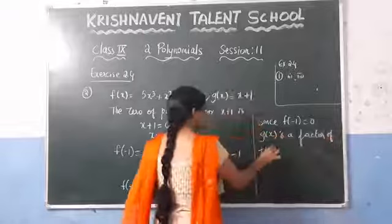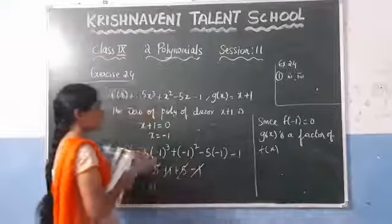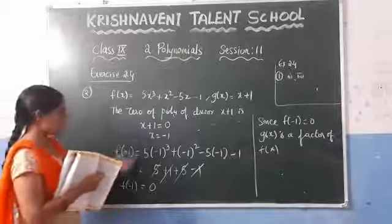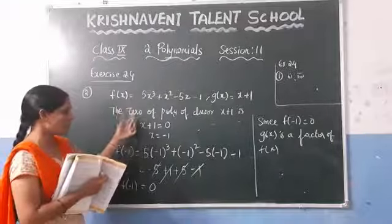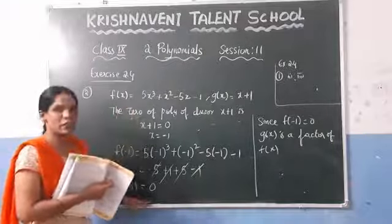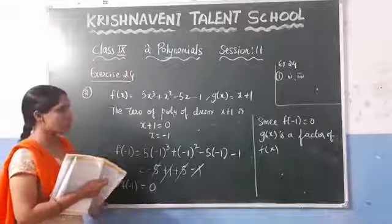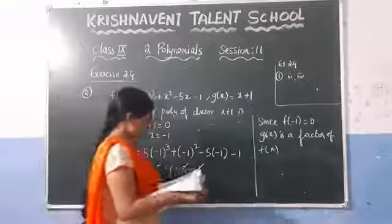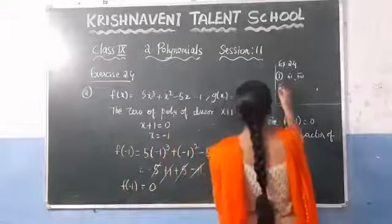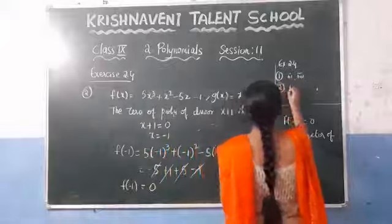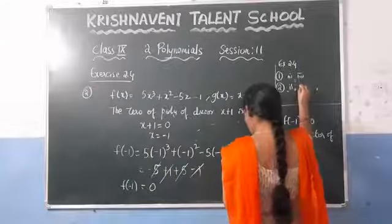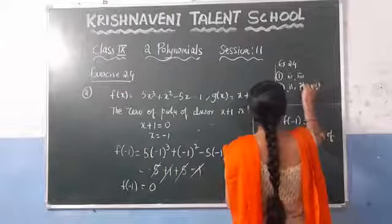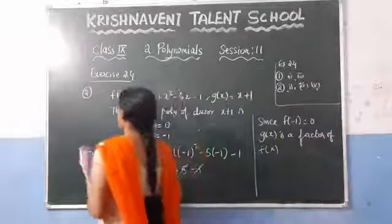It is very simple — just find the zero of the divisor to get the x value, then substitute that value into the dividend. If you get 0, it is a factor; otherwise it is not. For the second question, problems 2, 3, and 5 are your homework. I will now solve the fourth one.